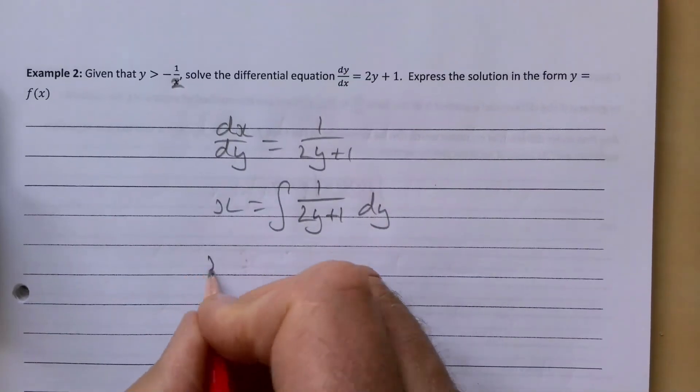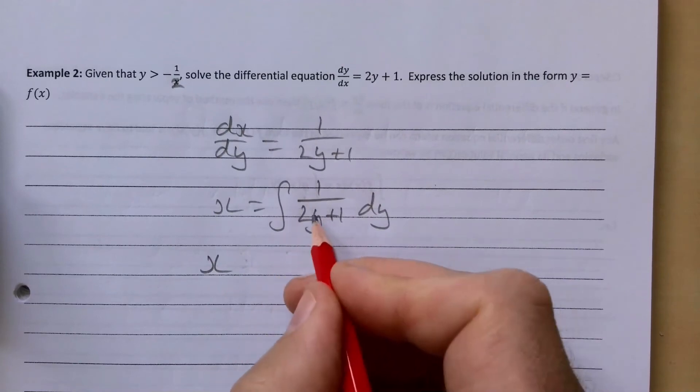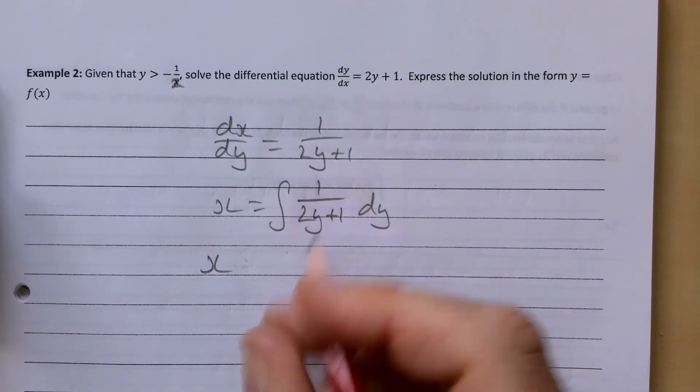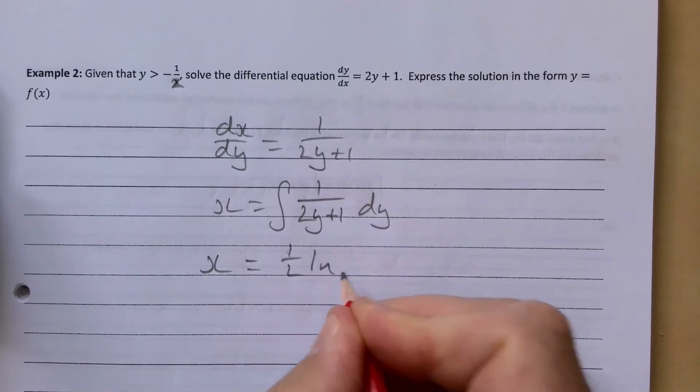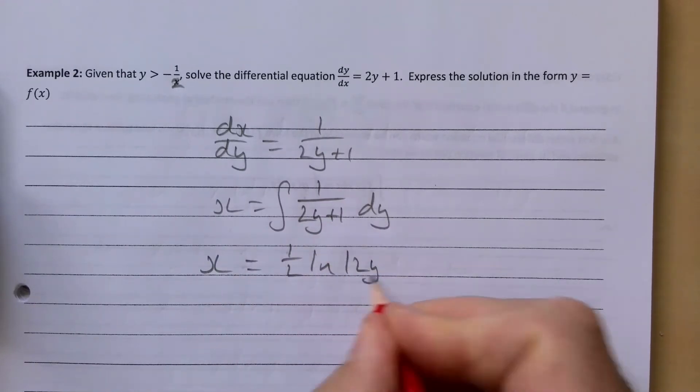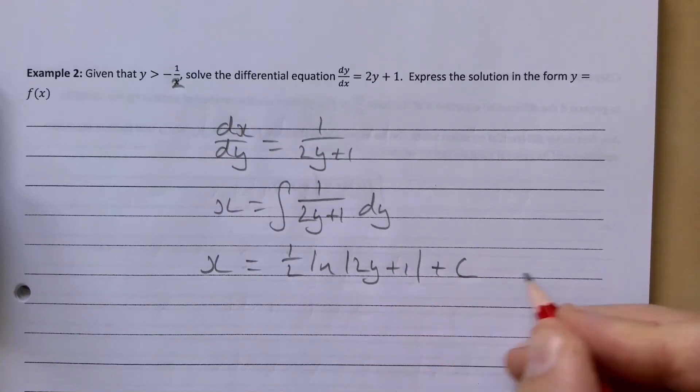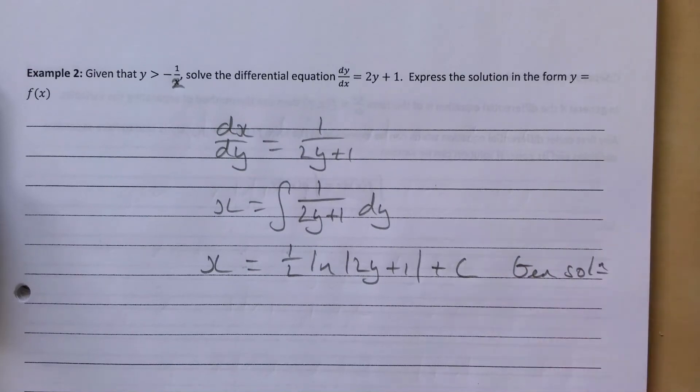That's going to be an ln. If you differentiate 2y + 1, you get 2. So if we take a half out the front, that's going to make that work. So x = ½ln(2y + 1) + c. That is our general solution.